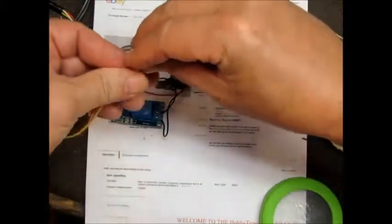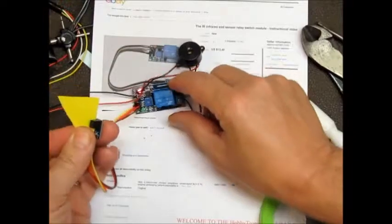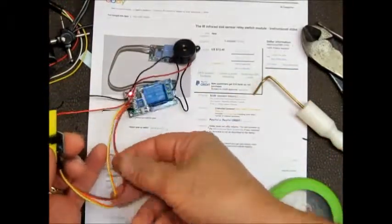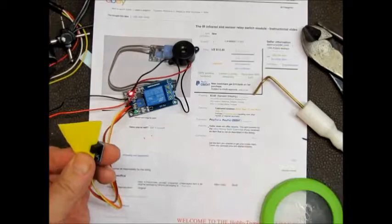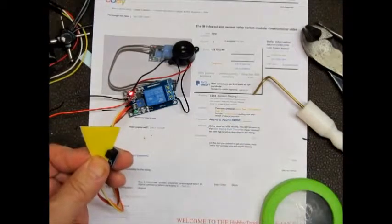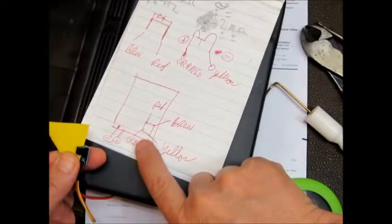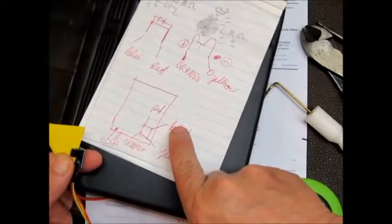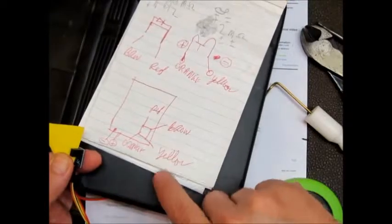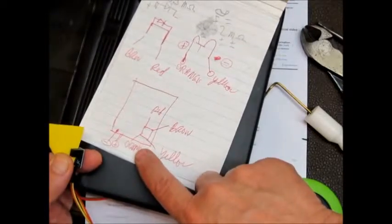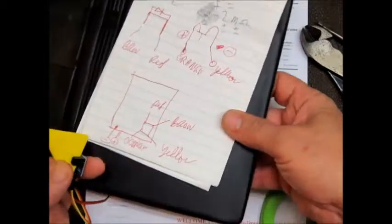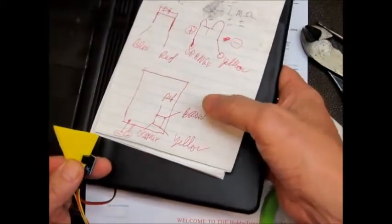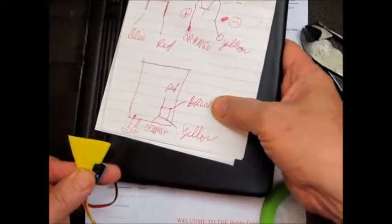One thing I would strongly suggest to everybody when they buy this, there's four colored wires here. When you first get it, write down the location of each one. The red goes on the top, the brown goes on the other top, yellow bottom right, orange bottom left. You'll have to make up your own charts because you'll need these for later. You'll have to always hook up the wires in the correct order.